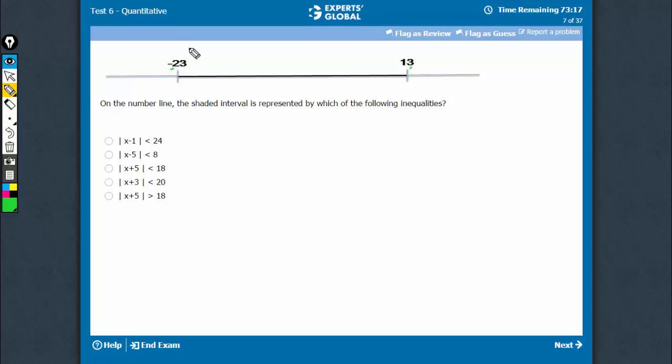So let's put these values here. Minus 23, minus 1, mod of this 24 becomes here. 24 and 24, they become equal. So this is possible.